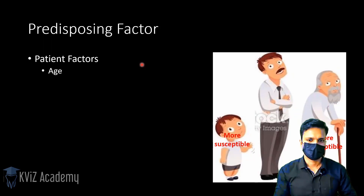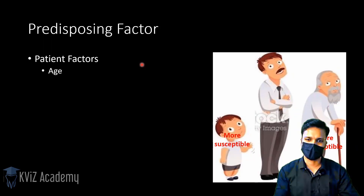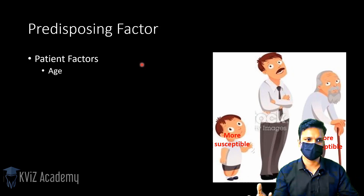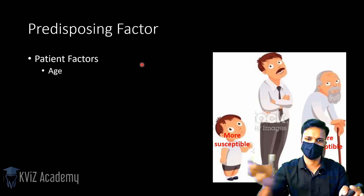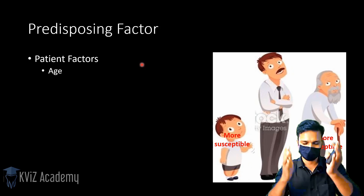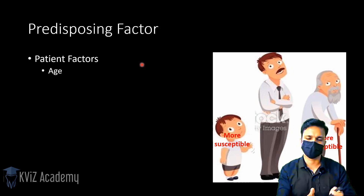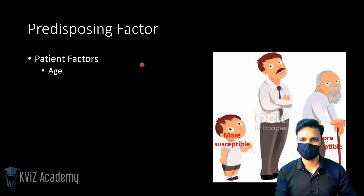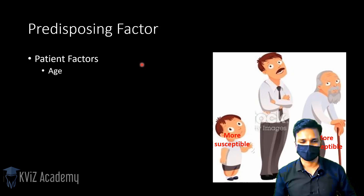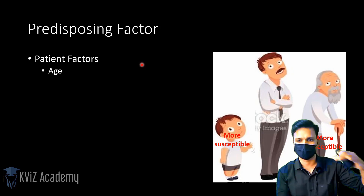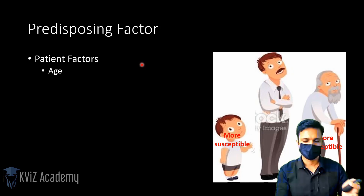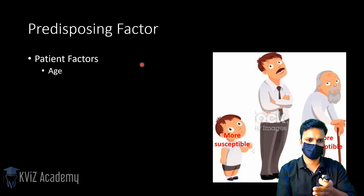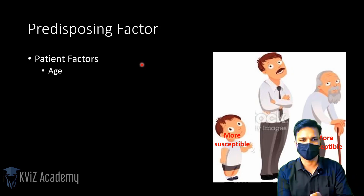The first factor is age of the patient. A younger patient and an older patient are both more susceptible to an overdose reaction. In a younger patient, bodily functions like liver function and kidney function have not reached their optimum level — they are still growing. So they might show an overdose reaction even at a lower dosage.